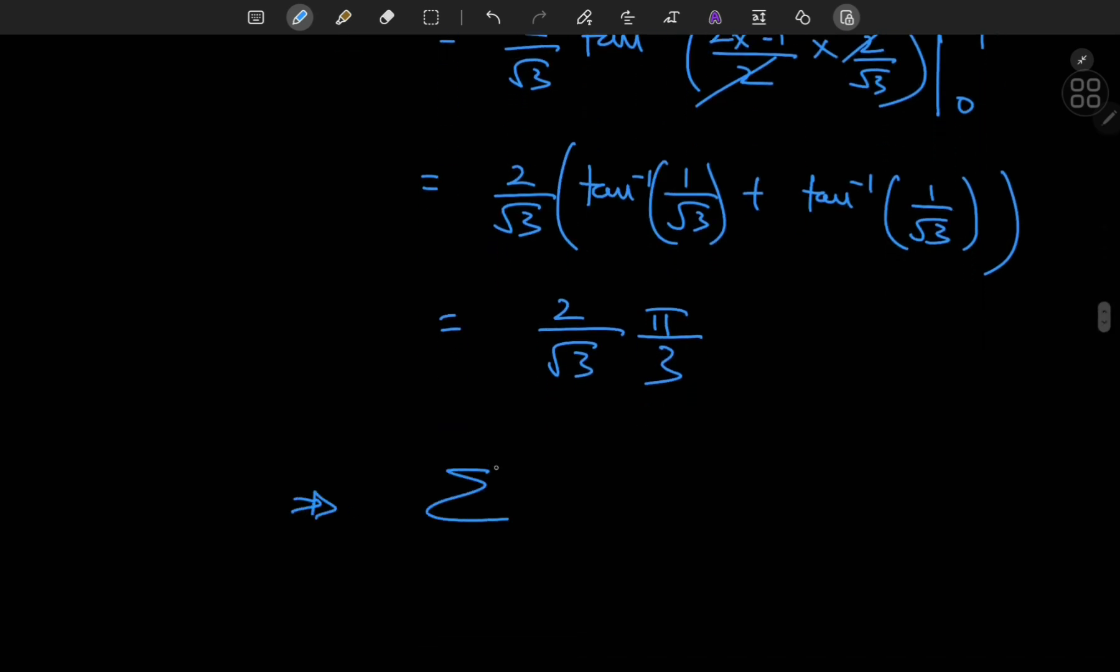So that means I have 2 by root 3 times pi by 3. So this implies that the sum over the positive integers n of gamma squared n divided by gamma 2n equals 2 pi by 3 times root 3.